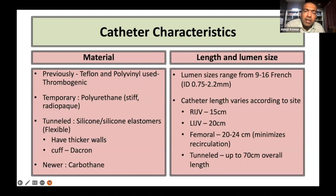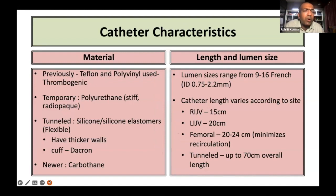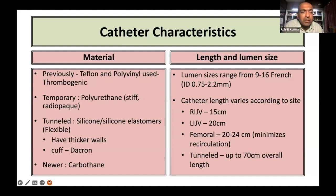In catheter characteristics: catheter material — initially Teflon and polyvinyl were used, but they were found to be very thrombogenic. Now for temporary catheters, usually polyurethane is used, although it is stiff and radio-opaque. Tunnel catheters typically are made out of silicone or silicone elastomers; they are quite flexible, they have thick walls, and the cuff used in the tunnel catheter is usually made of Dacron. There are newer catheters coming which are made of carbothene material.